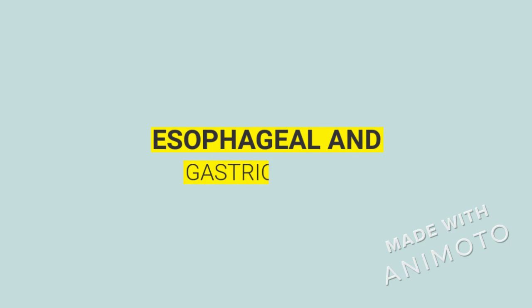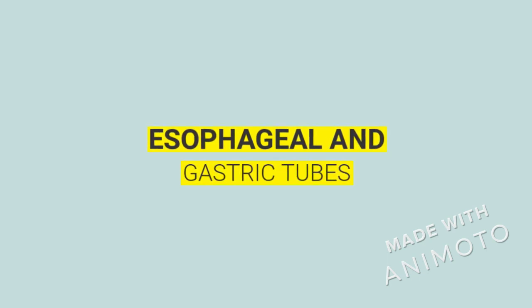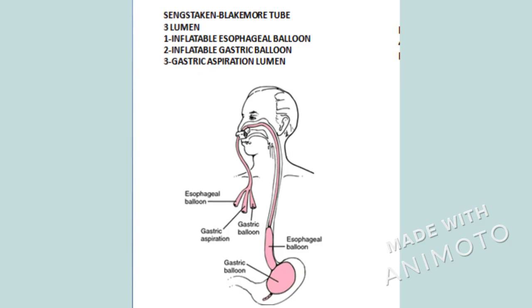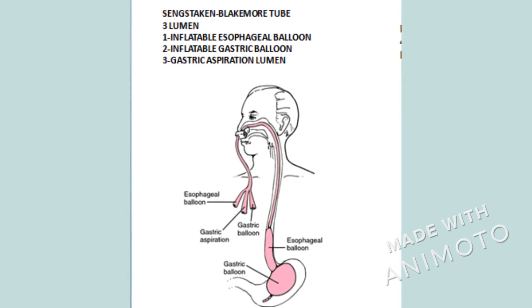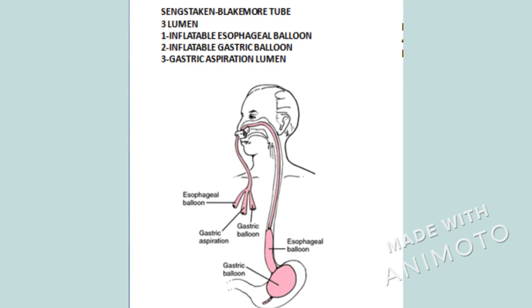The third type of tubes are the esophageal and gastric tubes, also divided into two types. The Sengstaken-Blakemore tube is a triple lumen tube that is widely used in cases of esophageal varices. However, it has one disadvantage — because it is a triple lumen tube, we have to insert another nasogastric tube from the other nostril for aspirating esophageal secretions.